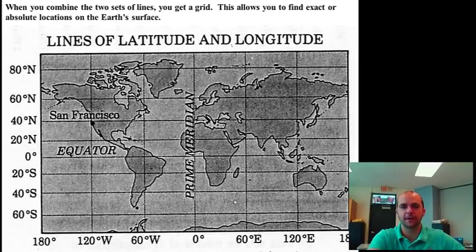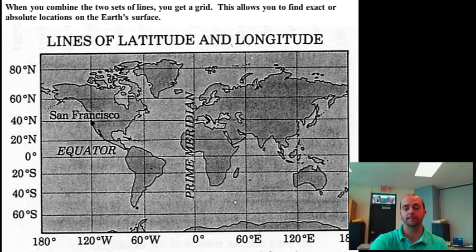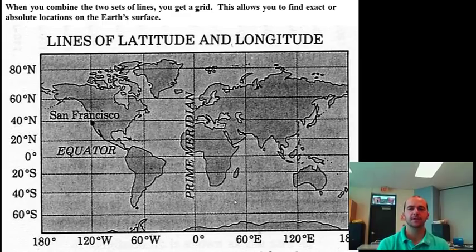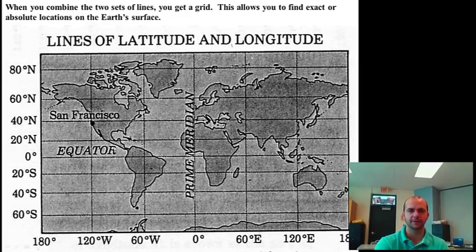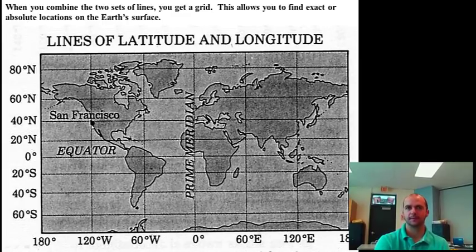When you combine the two sets of lines, you get a grid on the earth's surface on the map. This is an imaginary grid — it doesn't really exist out there. You won't go tripping over lines of latitude and longitude, but it's just a way that geographers and basically anybody uses to locate a place on the map. Take a look at this map: where would San Francisco be located? It looks like San Francisco would be at about 39 degrees north latitude and 118 to 119 degrees west longitude. When doing latitude and longitude, it's okay to estimate, because you can zoom in to find an exact location, but with the entire earth's surface visible you just have to estimate.